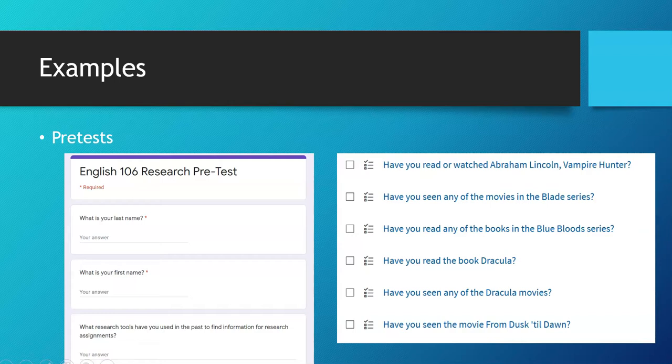Another example of a pre-test is an inventory. When I teach my first year seminar, I want to get an idea of what vampire movies and books they already have read. And that helps guide me through the rest of the semester so that I know their familiarity with different sources as I design the class.